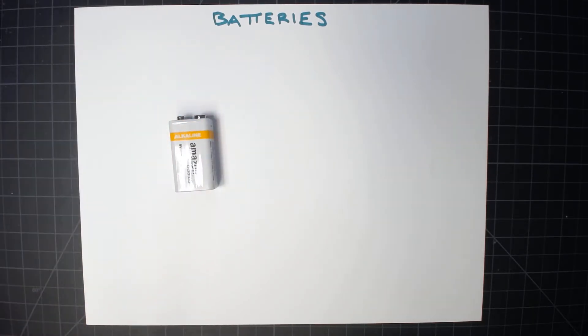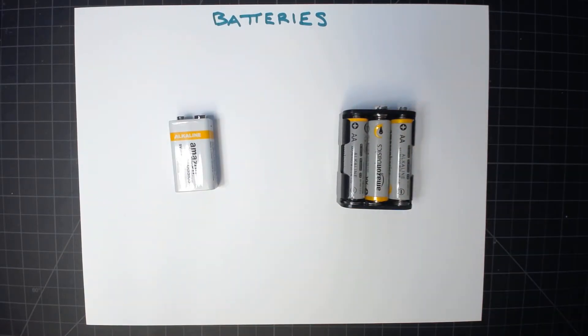This is a 9 volt battery. This is a pack that holds six AA batteries. This is also 9 volts. What's the difference?